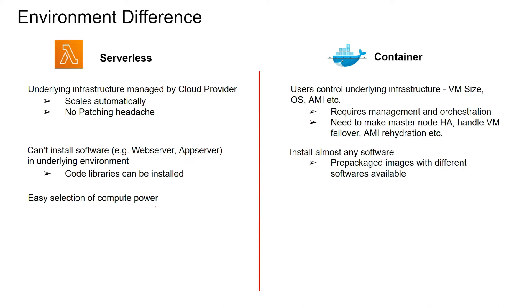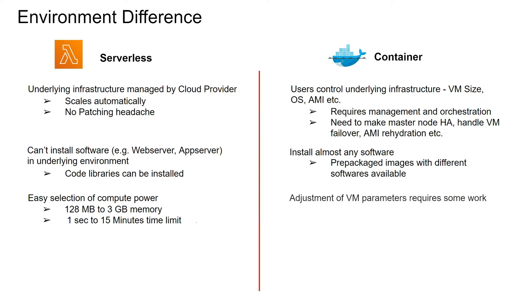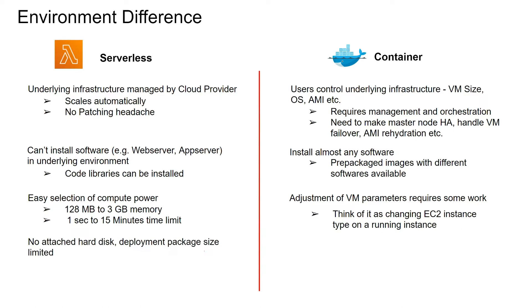On the compute power side, serverless gives you an easy selection on a slider scale — you can select memory from 128 megabytes to 3 gigabytes, and as you increase memory the CPU also increases. The time limit is from 1 second to 15 minutes. On the container side, adjustment of VM parameters requires some work — think of it as changing an EC2 instance type on a running instance. With Lambda there is no attached hard disk, deployment packet size is limited, and there is only very limited temporary storage with no permanent storage attached. For containers, hard disks are attached to nodes.